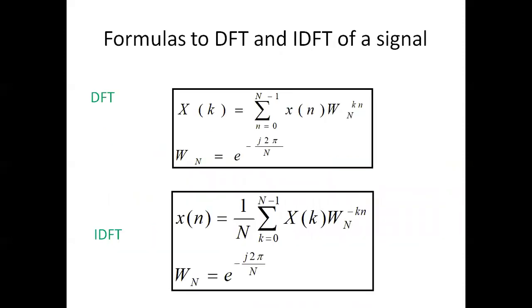We will discuss the formulas used to compute DFT and IDFT of a signal. The DFT of a signal X(K) is equal to the summation from n=0 to N-1 of x(n) * W_N^(KN), where x(n) is the input signal, N is the number of samples, and K goes from 0 to N-1. W_N is the twiddle factor equal to e^(-j2π/N). The IDFT of a signal x(n) is equal to (1/N) * summation from K=0 to N-1 of X(K) * W_N^(-KN), where W_N is the twiddle factor.